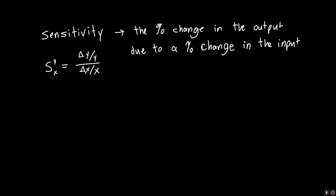This might seem a little weird at first but let's explore it with a couple of different functions. Let's say that y is linearly related to some variable. In electrical engineering this is going to be some voltage dependent on either some resistance or some current, and it might be a nonlinear function but often it is just a simple linear function. If we plug in the definition of sensitivity and rearrange, changing the deltas into derivatives, we get x over y times the derivative of y with respect to x.